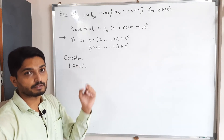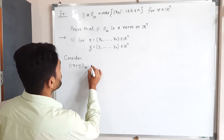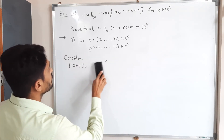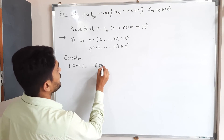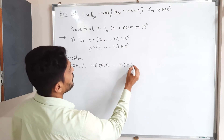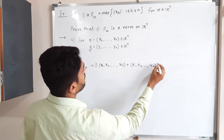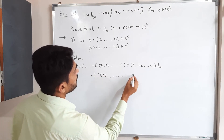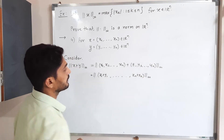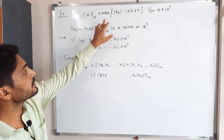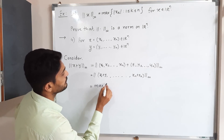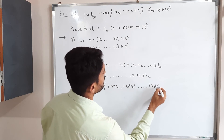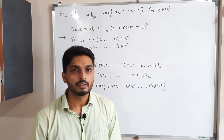For the fourth property, we require two elements x = (x₁, ..., xₙ) and y = (y₁, ..., yₙ). We start with ‖x + y‖∞ and must show it is ≤ ‖x‖∞ + ‖y‖∞. Adding component-wise: ‖x + y‖∞ = ‖(x₁ + y₁, ..., xₙ + yₙ)‖∞ = max(|x₁ + y₁|, |x₂ + y₂|, ..., |xₙ + yₙ|).